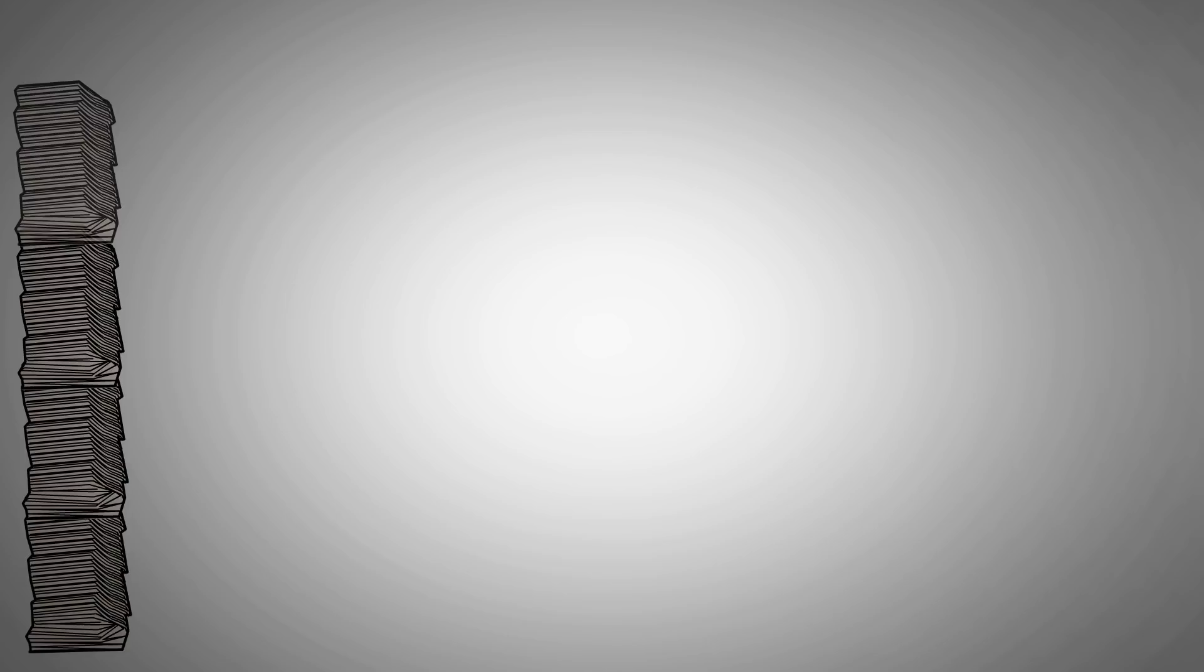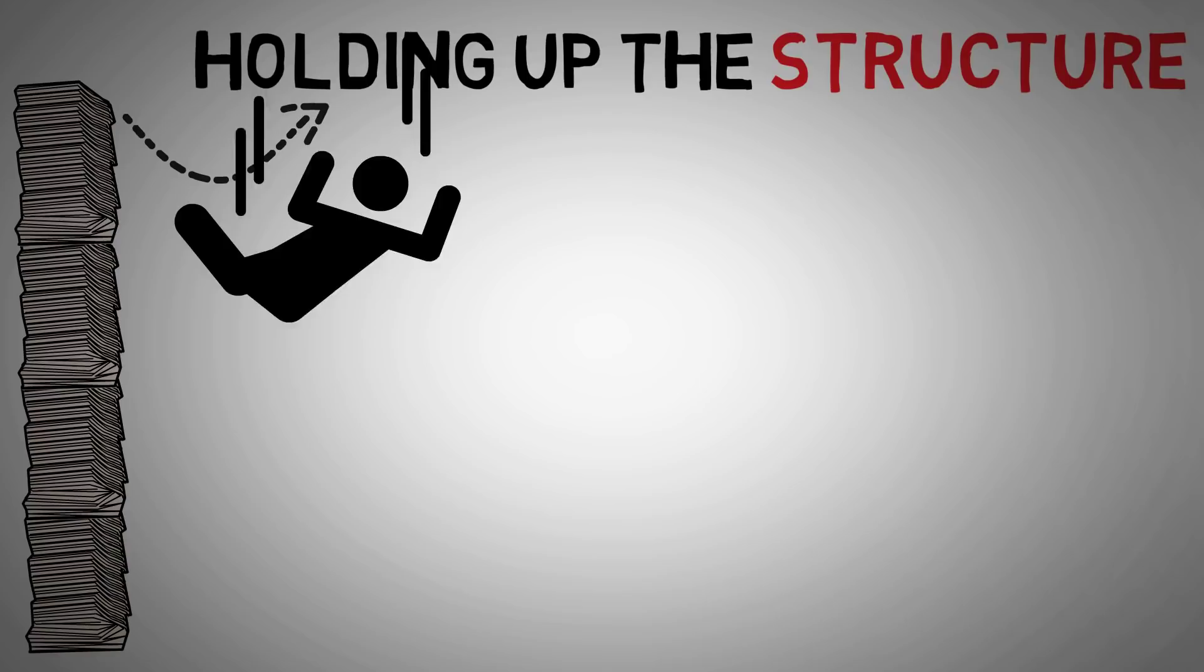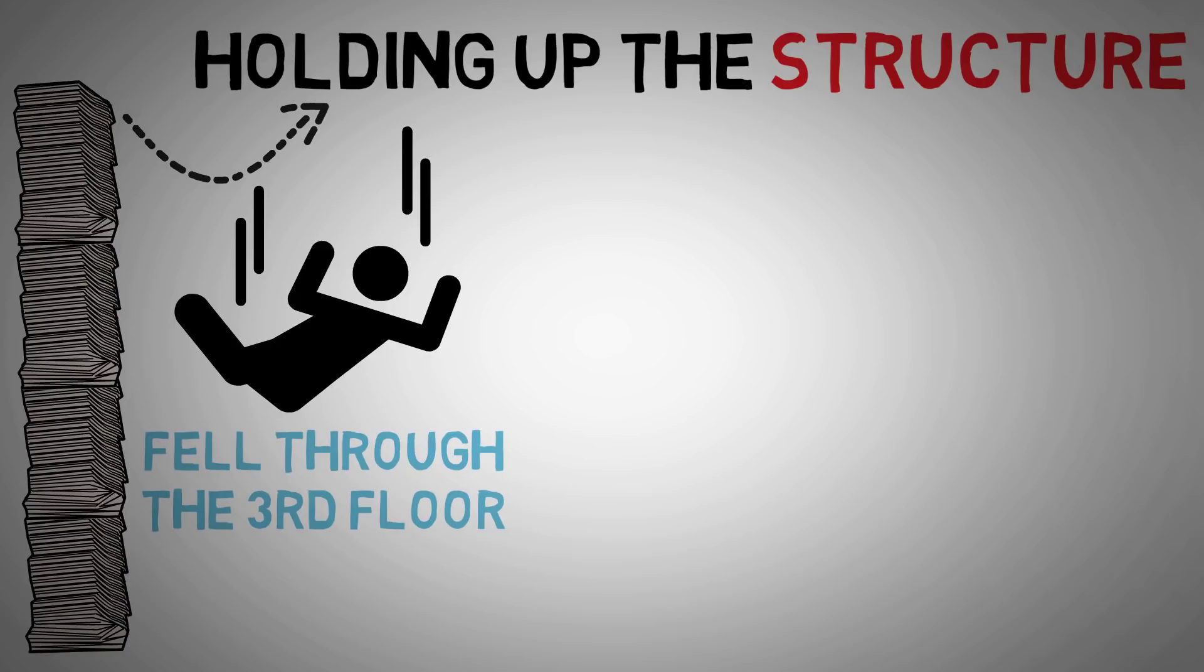Now, removing the junk was a difficult process in itself, because 120 tons of junk is a lot of stuff. In fact, the house was so decrepit that the junk was literally holding up the structure of the home. At one point during the search, an investigator fell through the third-story floor.